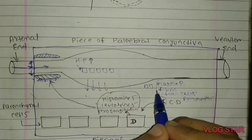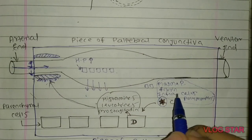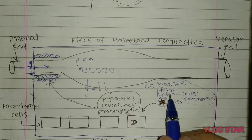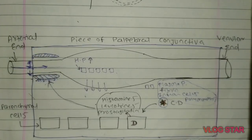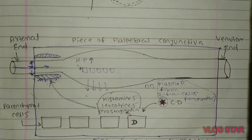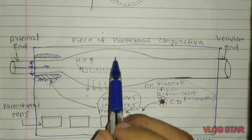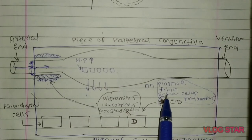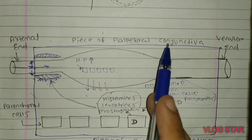These plasma proteins, fibrin, inflammatory cells, and polymorphs are collectively called exudative fluid. This exudative fluid enters the interstitial space of the palpebral conjunctiva, causing edema. The exudative fluid then coagulates and forms a membrane on the palpebral conjunctiva.